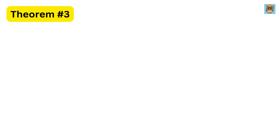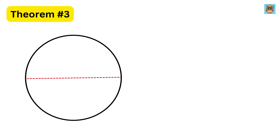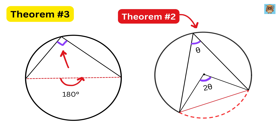Theorem number three: angle in a semicircle is always 90 degrees. This means if an arc is a semicircle, that is, its endpoints lie on a diameter, then the angle subtended at the circumference is always 90 degrees. Using theorem two, this is because a full circle has 360 degrees, so half of a circle has 180 degrees. Therefore, the angle subtended by this semicircle on the circumference will be half of it, or 90 degrees.